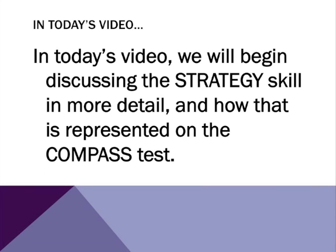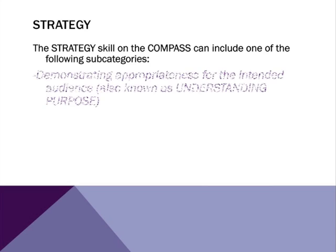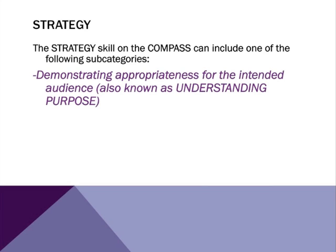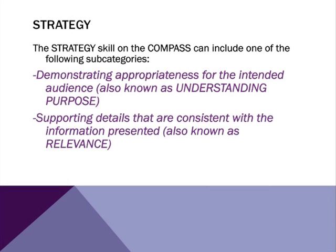How does strategy play a part in this particular part of the test? The strategy section on the Compass can basically include one of the following subcategories. One is focusing on understanding the purpose — is the text appropriate for the particular audience? Even looking at our answer choices, thinking about who's reading this, are the answer choices themselves always appropriate? This also connects to the idea of relevance. There may be information in an answer choice that seems interesting, or perhaps even connected in some ways to the text, but may not be relevant to this particular question or point.